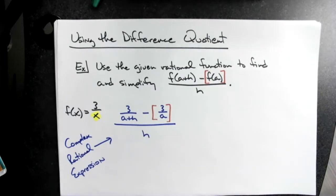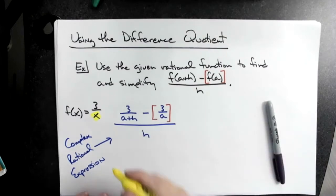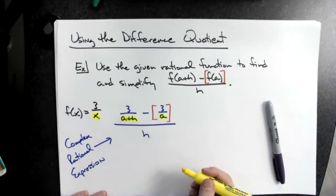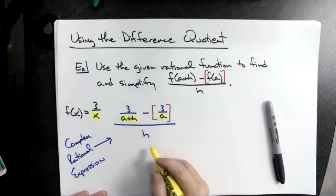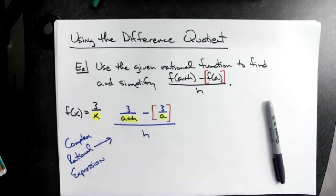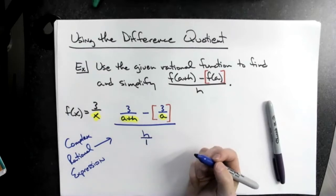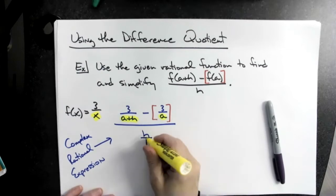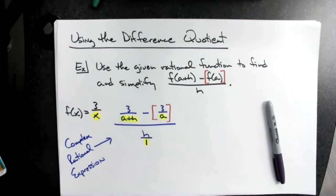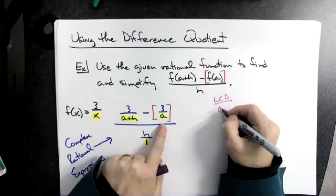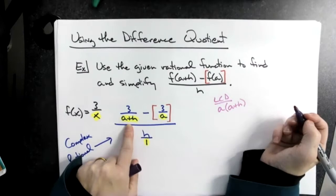I want to multiply through by the least common denominator, but this is tricky. People tell me (a+h) is in the denominator — I agree. They tell me a is in the denominator — I agree. Then they say h is in the denominator, but it's not. H is in the denominator of the overall large fraction, but technically h is over one. That right there is the number one mistake — people try to include h in the least common denominator, and it is not.